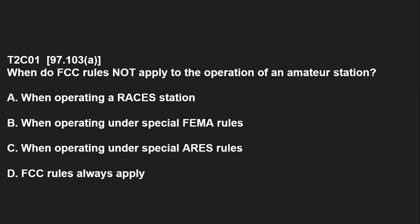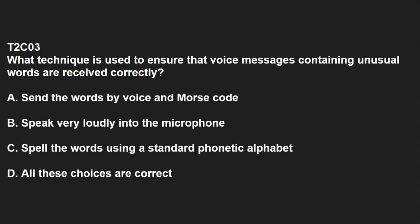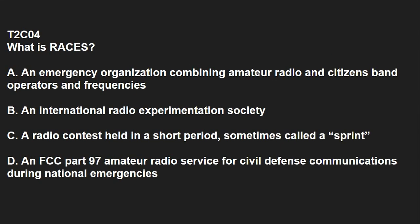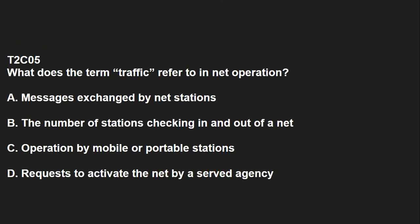T2C01: When do FCC rules not apply to the operation of an amateur station? FCC rules always apply. T2C02: Which of the following are typical duties of a net control station? Call the net to order and direct communications between stations checking in. T2C03: Which technique is used to ensure that voice messages containing unusual words are received correctly? Spell the words using a standard phonetic alphabet. T2C04: What is RACES? It is the FCC Part 97 Amateur Radio Service for Civil Defense Communications during National Emergencies. T2C05: What does the term traffic refer to in net operation? Messages exchanged by net stations.